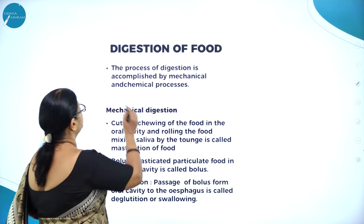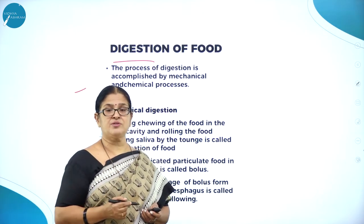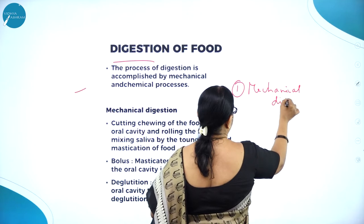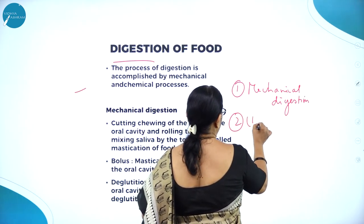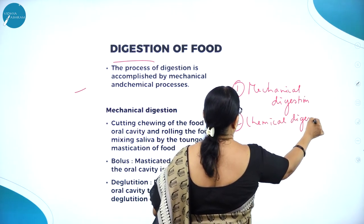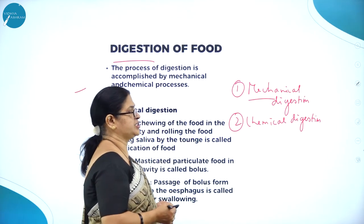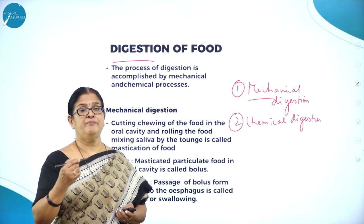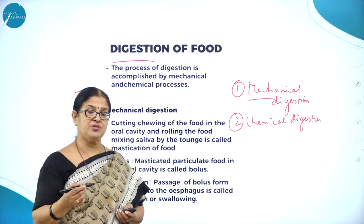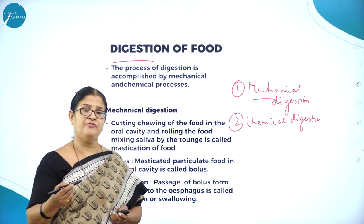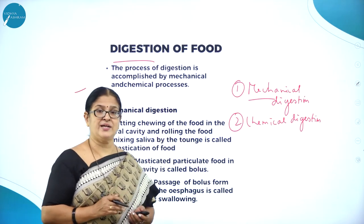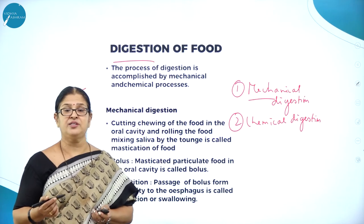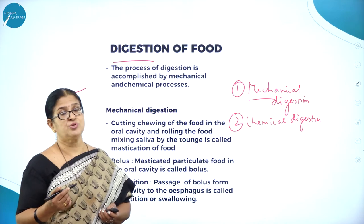Moving on to digestion of food. The process of digestion can be classified into two main types: mechanical digestion and chemical digestion. Mechanical digestion involves the intake of food, mastication — chewing the food — and mixing of the food with saliva to make it into a semi-solid food called bolus, which then rolls into the esophagus. Teeth are very important in mastication, and we have different types — incisors, canines, molars, and premolars — which do the process of grinding.